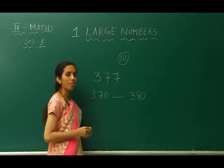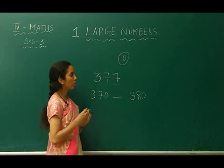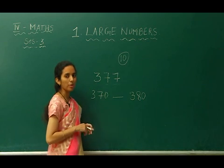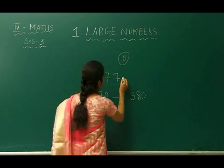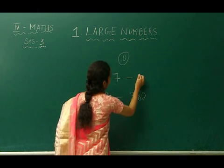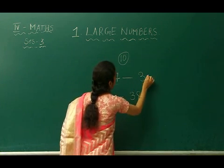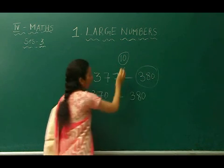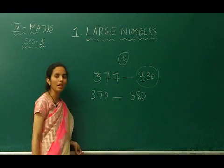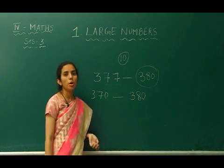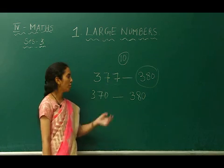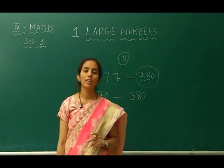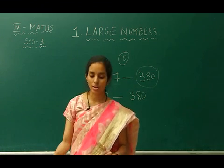If the number is 5 or above 5, it should be rounded up to the upper limit, that is 380. So if the number is rounded to the nearest ten, the school has to prepare food for 380 children.